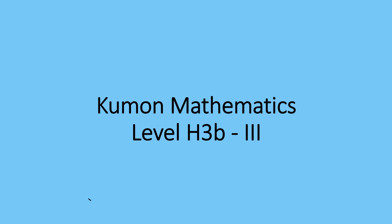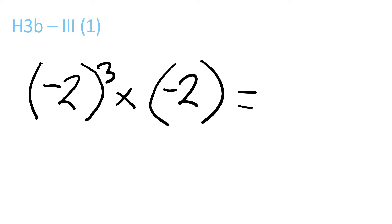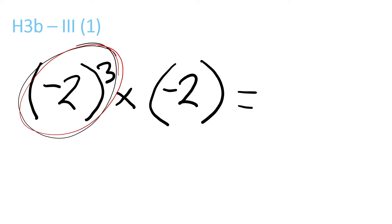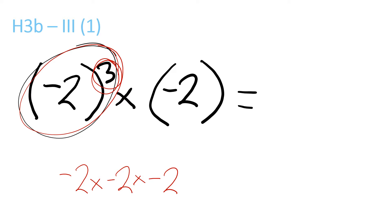Hey guys, this is Kraken Kumon, back with another video. So, here we have this equation. This part of the equation means we have to do minus 2 times minus 2 times minus 2, because of that 3 up there — that means times minus 2, 3 times.